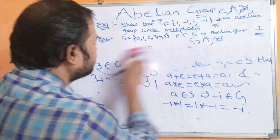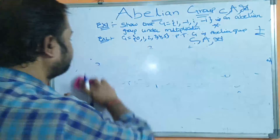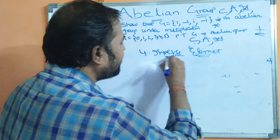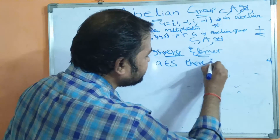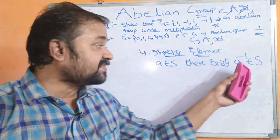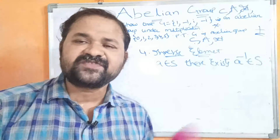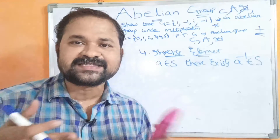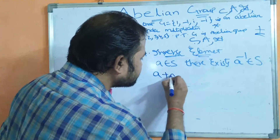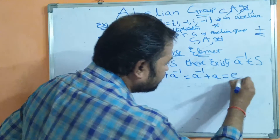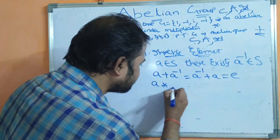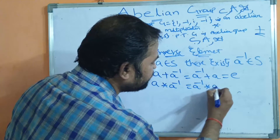The next property is inverse element. For any element A belonging to S, there exists another element A⁻¹ also belonging to S. The condition is: A + A⁻¹ = A⁻¹ + A = e. For the star operation: A ★ A⁻¹ = A⁻¹ ★ A = e, where e is the identity element.